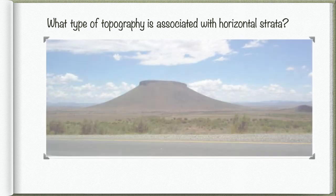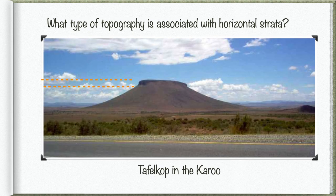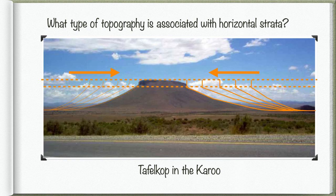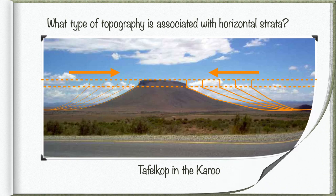Here we see a picture of Tafelkop in the Karoo. Notice that the cap rock represents the original feature — the resistant rock at the top. Then notice how this was progressively cut back. Eventually we have this Tafelkop or tabletop mountain because erosion cut all the way back, removing all the other layers of the plateau. And notice that all the time as erosion occurs, the height of the feature remains constant.